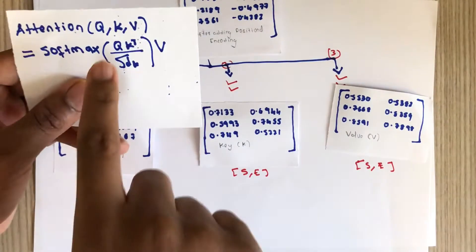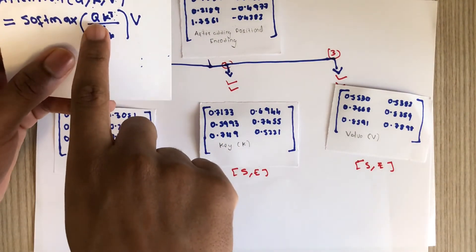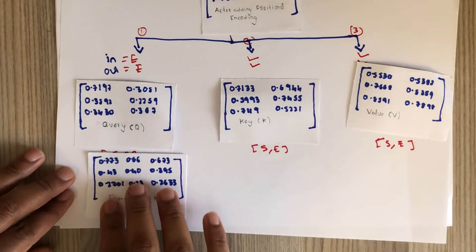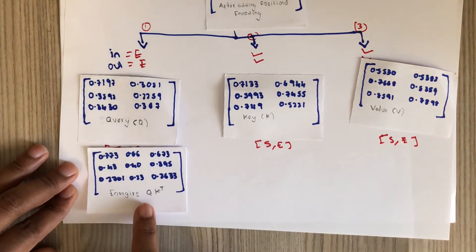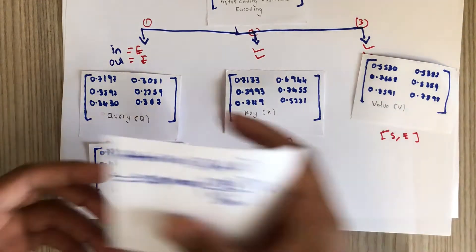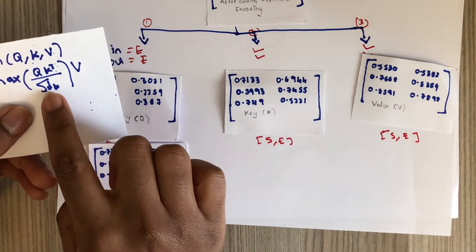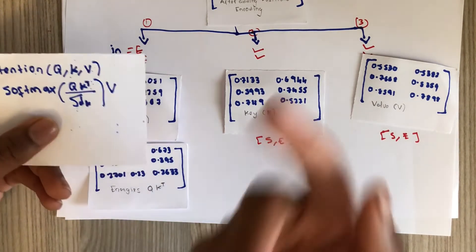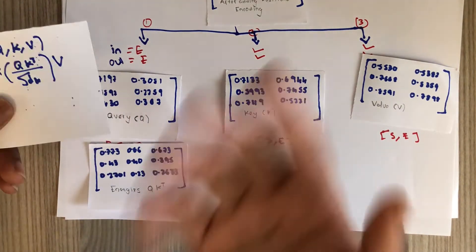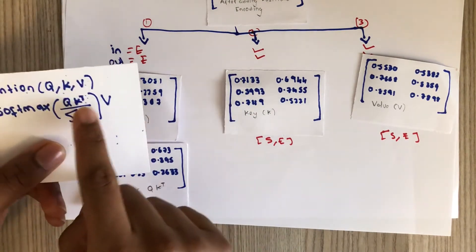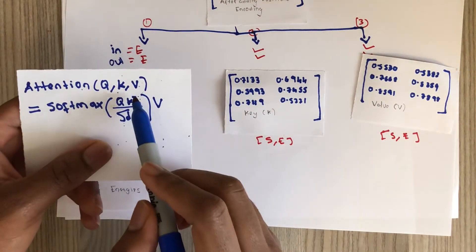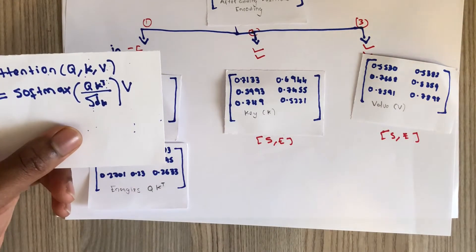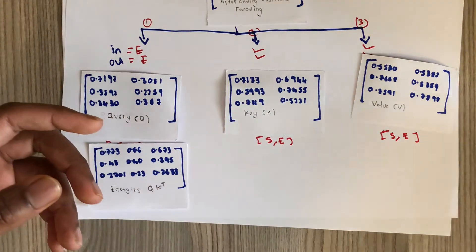Next, we calculate Q times K-transpose and call the result 'energies'. We also need to compute the square root of the embedding dimension — the square root of 2 in this case. We then divide the energies by this value.